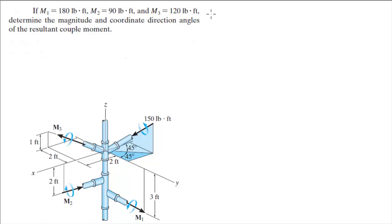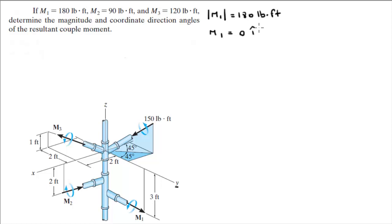M1 has a magnitude of 180 pound-feet and M1 is aimed straight parallel to the y-axis, so the Cartesian vector form of M1 is equal to 0i + 180j + 0k.